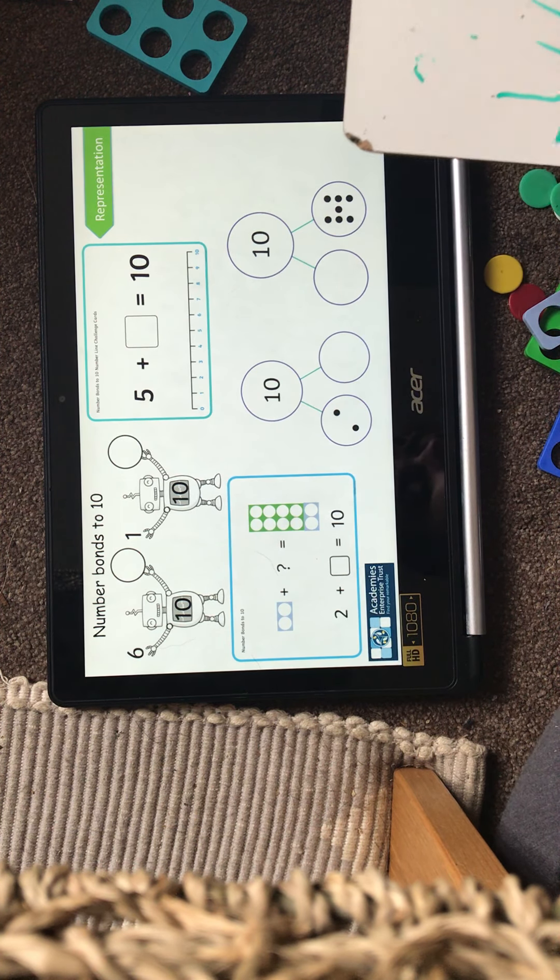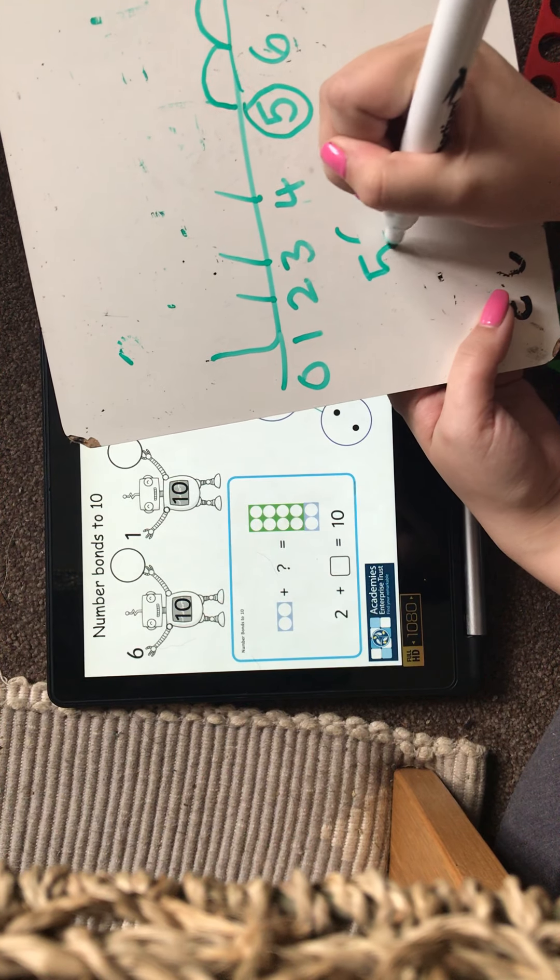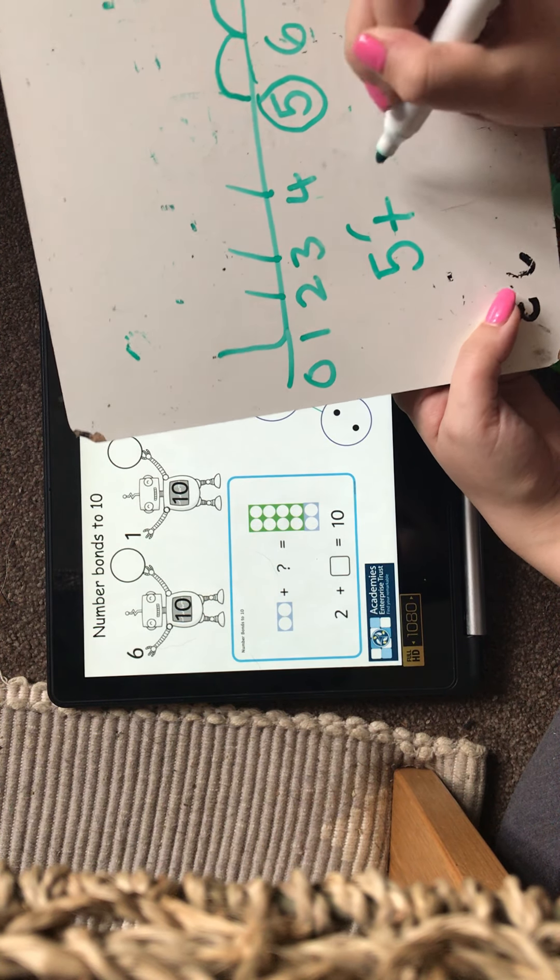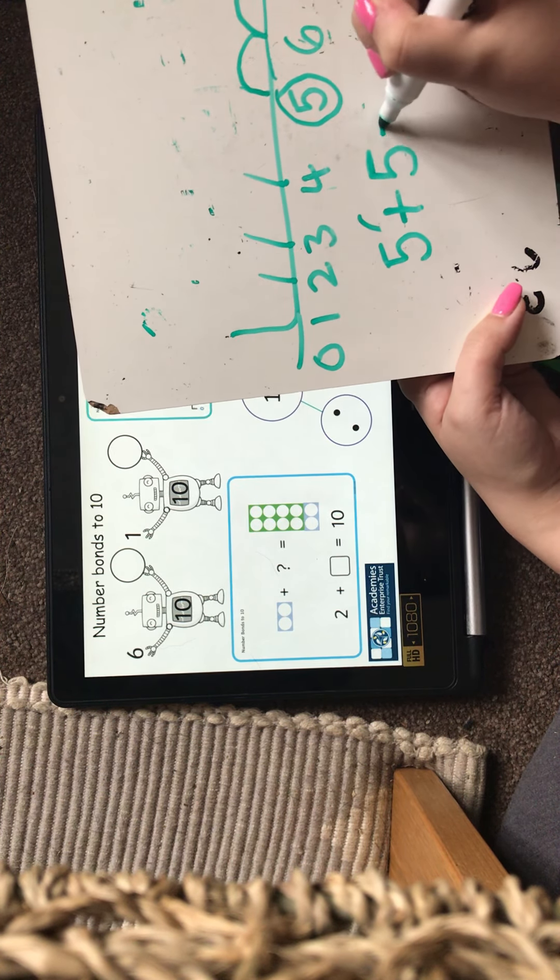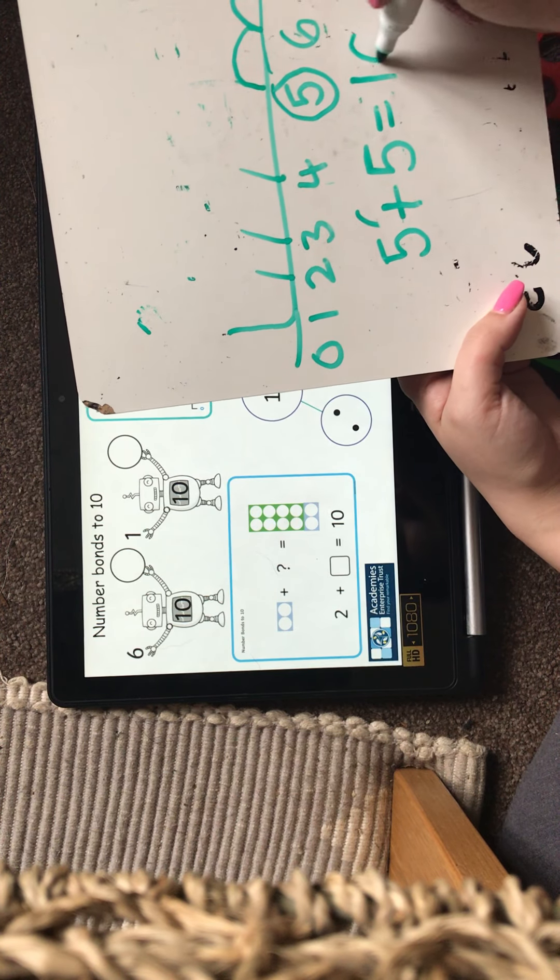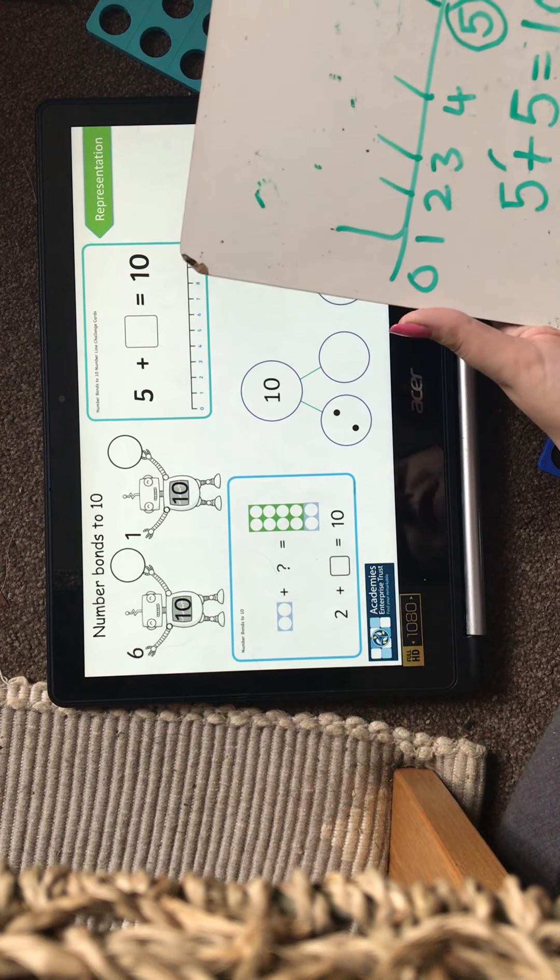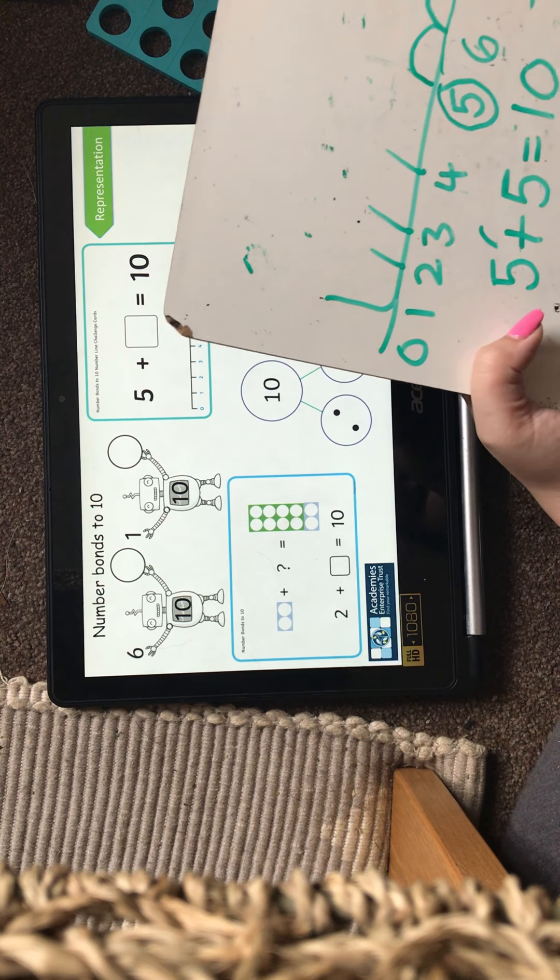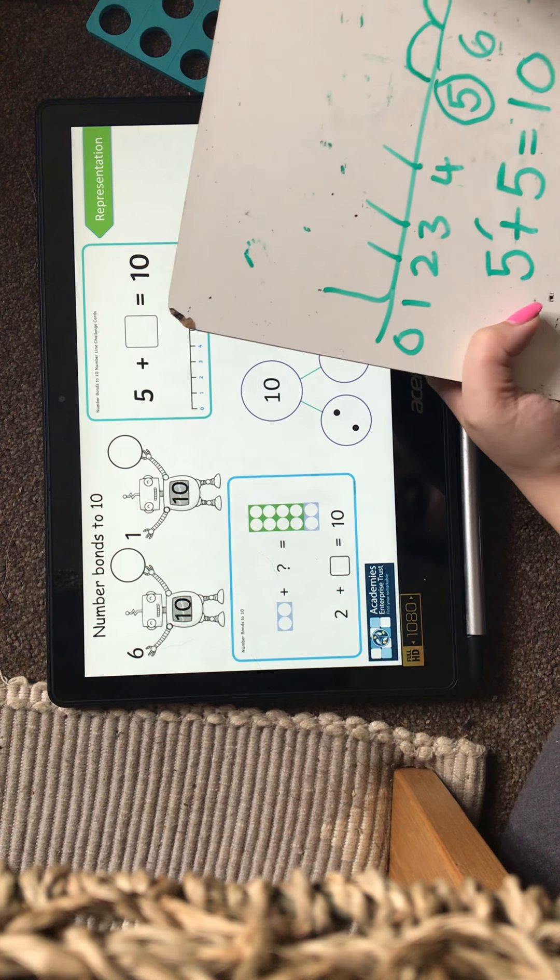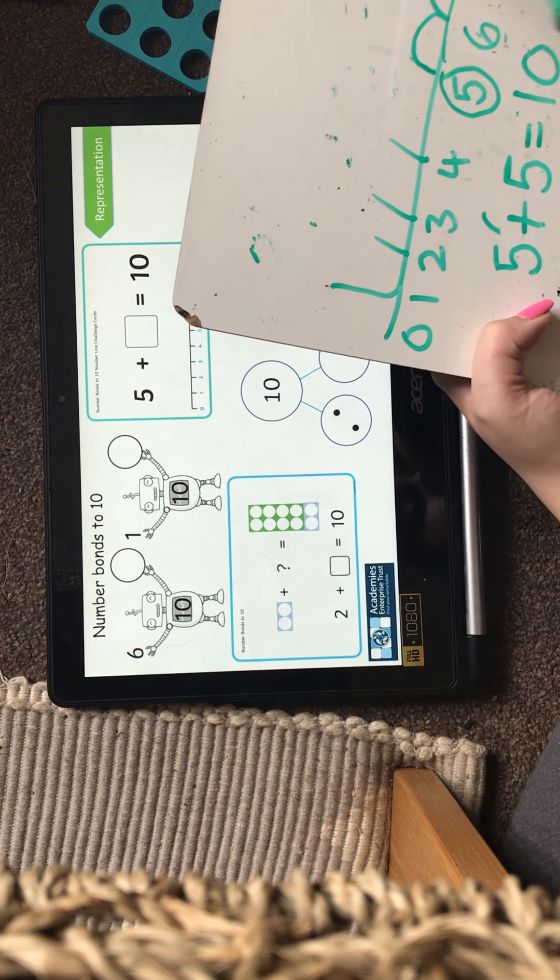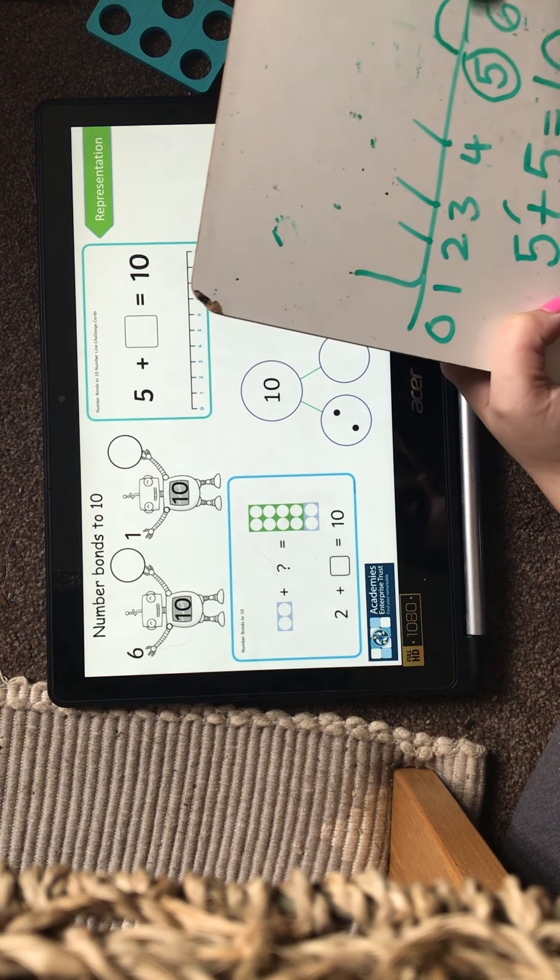I would write my calculation out. So 5 add 5 equals 10. Now I need to check my number formation and make sure my letters are formed correctly. Because sometimes if we mix them up, for example 6 and 9, if you mix those up you could get the wrong answer.